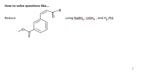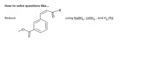In this video we will be tackling a problem that says reduce a compound using three reagents: sodium borohydride, a well-known reducing agent; lithium aluminium hydride, a well-known powerful reducing agent; and hydrogen with palladium catalyst. This is an open-ended question and we will have to make cases and follow accordingly. A quick analysis of the reactant shows an aldehydic functional group, an ester functional group, and another carbonyl.